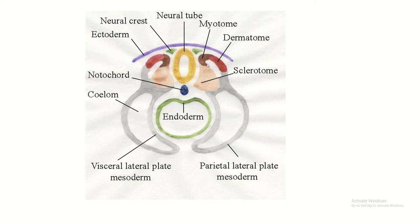You can see the parts of the paraxial mesoderm. This particular segment is known as the somite. This is the location of the myotome, this is the location of the dermatome, and this is the location of the sclerotome.